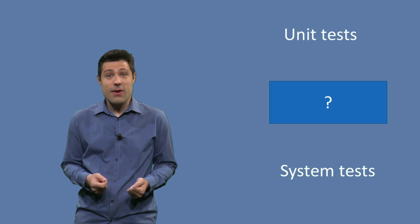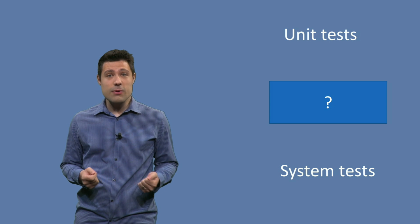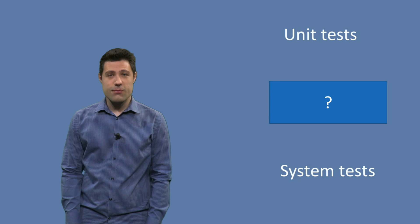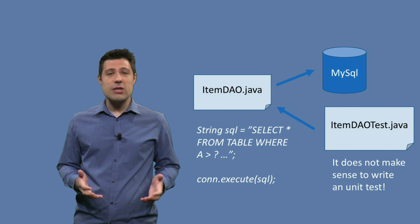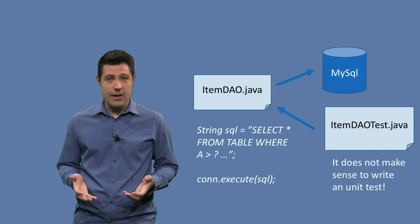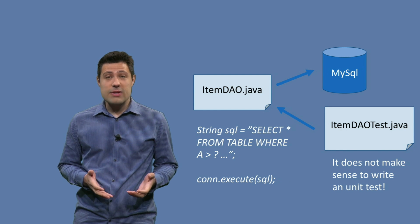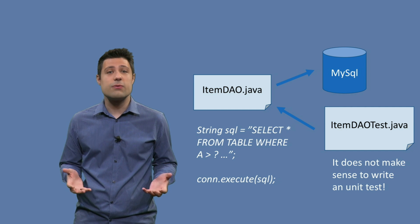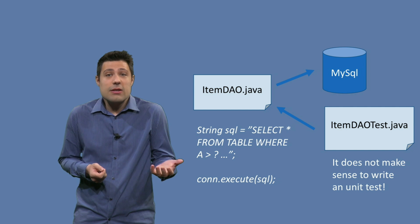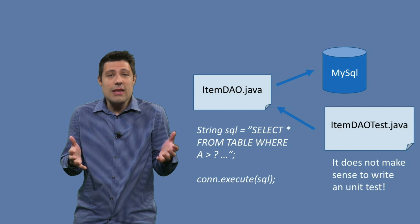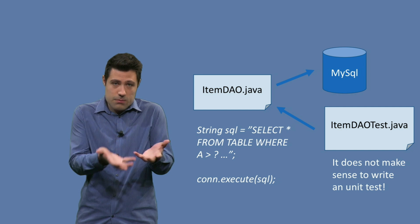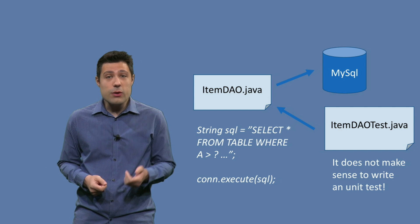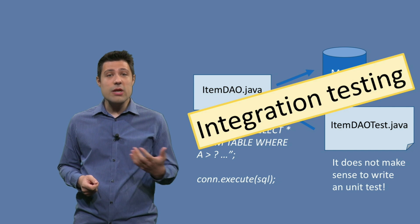Yes, in fact there is, and a very good example is as soon as you have an integration with an external system. For example, let's suppose your application talks to a MySQL database. You have this data access object, and this class talks to the database via SQL queries. And you want to test not the whole system, but only the interaction between this part of the system, this class, and the database. When you do this, we call it an integration test.